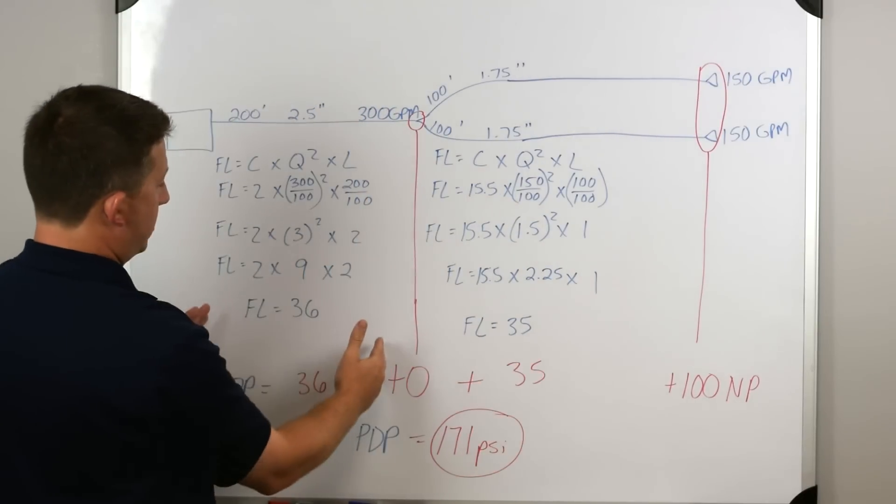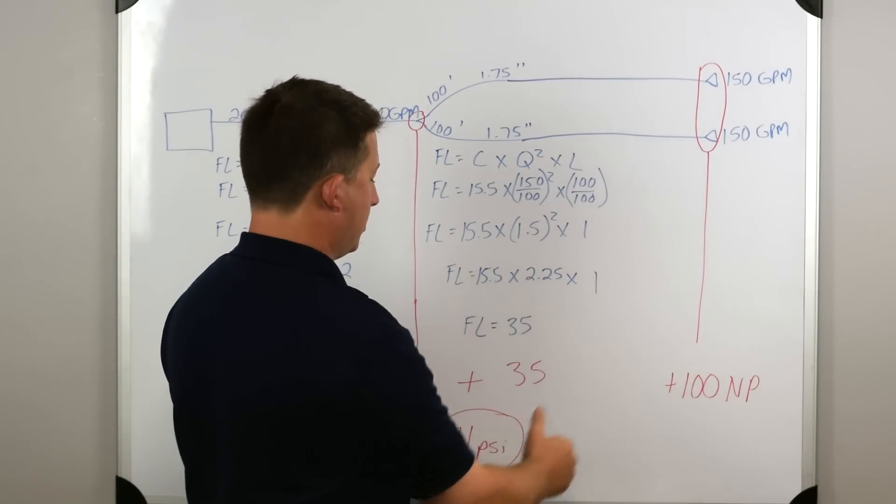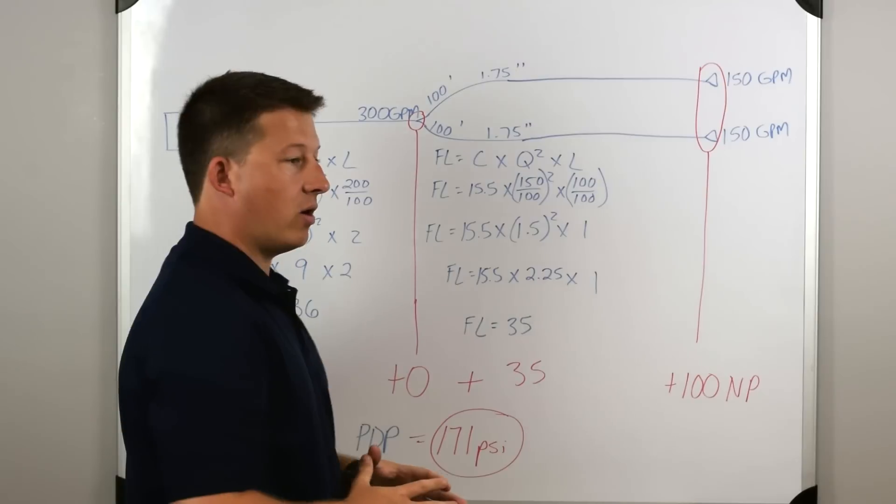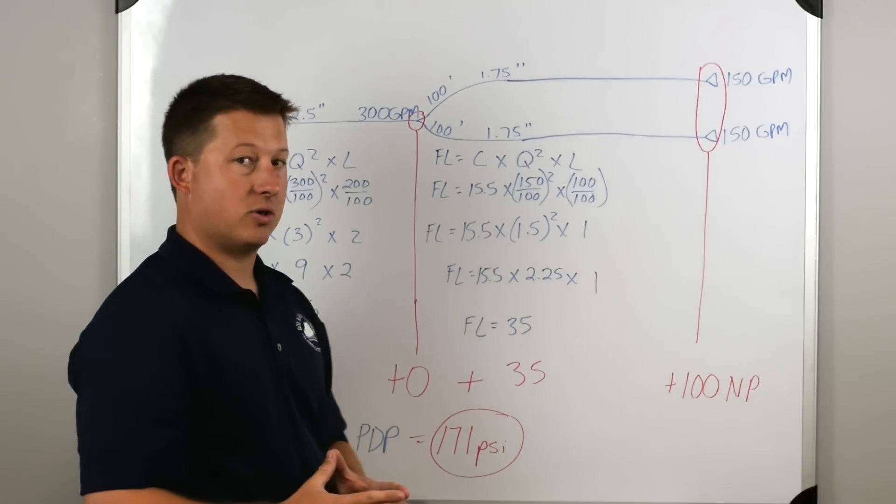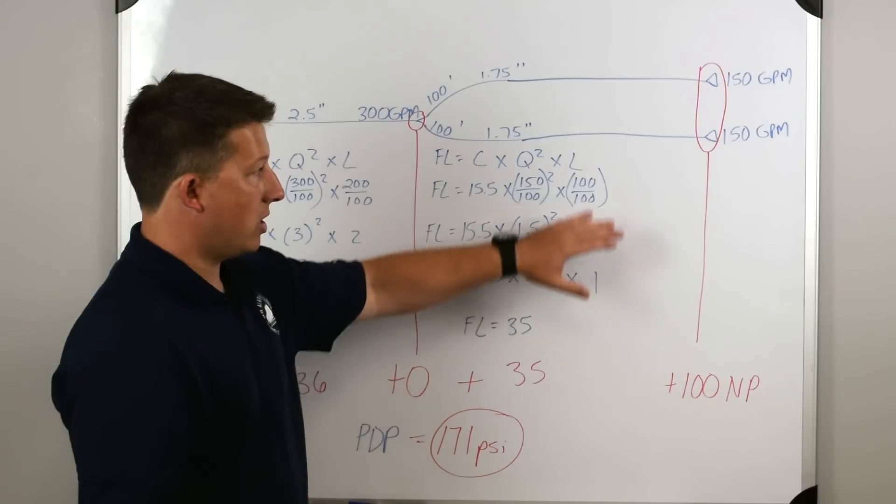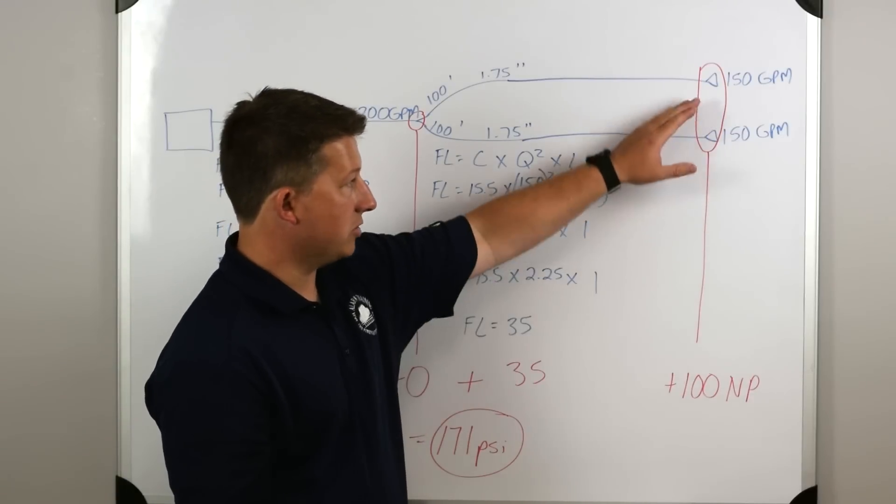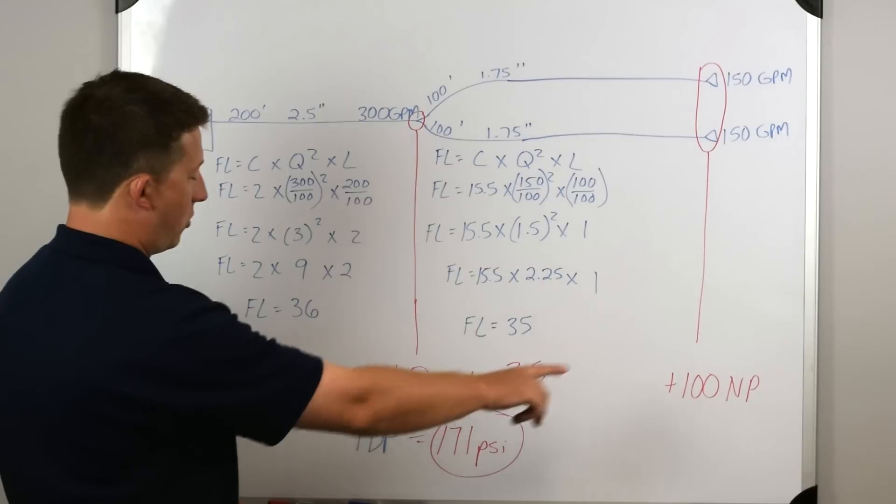So simplifying our problem, we have 15.5 times 2.25 times one, which is going to equal the friction loss of 35. So on this section, we had 36 pounds of friction loss. On this section, we had 35 pounds of friction loss. So we can drop down and figure out what our pump discharge pressure is supposed to be, which is the sum of everything from the pump all the way to the nozzle.